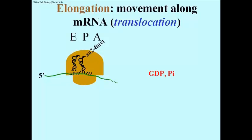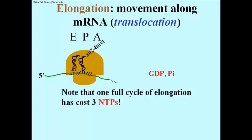It catalyzes the movement of the ribosome along the message, and you saw that happen in the animation. Again, this requires GTP, which is hydrolyzed in the process. This is one full cycle of elongation.